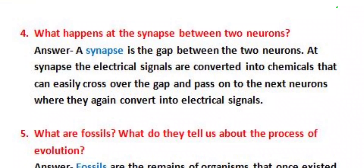Our next question is, what happens at the synapse? A synapse is the gap between the two neurons. At synapse, the electrical signals are converted into chemicals that can easily cross over the gap and pass on to the next neuron, where they again convert into electrical signals.